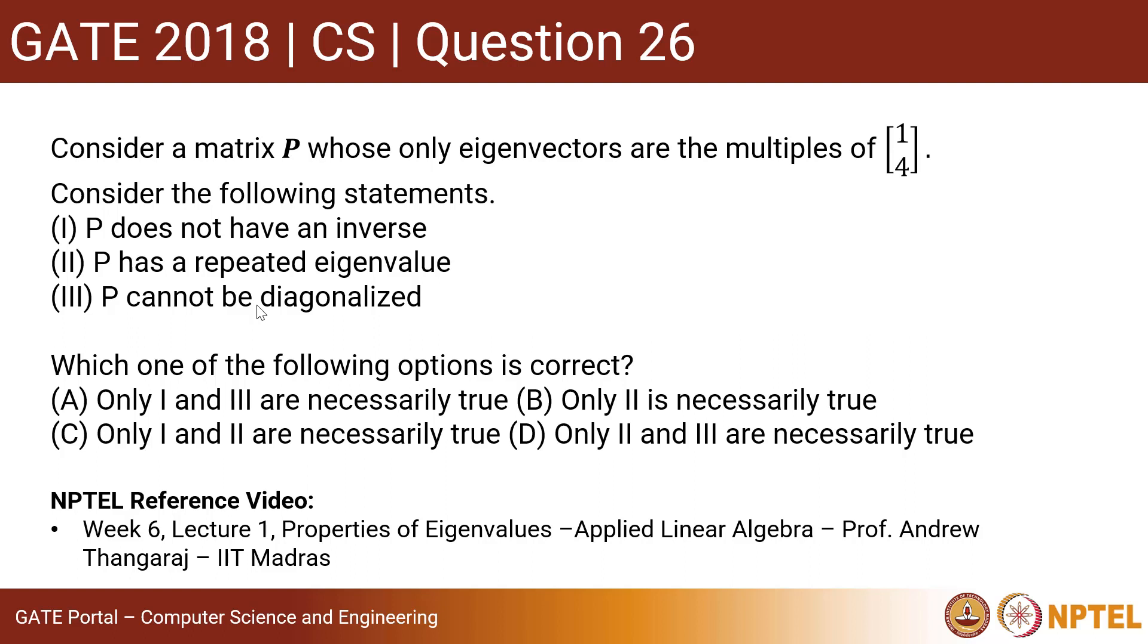Hi y'all, this is GATE 2018, Computer Science, Question 26. The question states that consider a matrix P whose only eigenvectors are the multiples of 1,4. Now consider the following statements: P does not have an inverse, P has a repeated eigenvalue, P cannot be diagonalized. You have to determine which of the following options are correct.